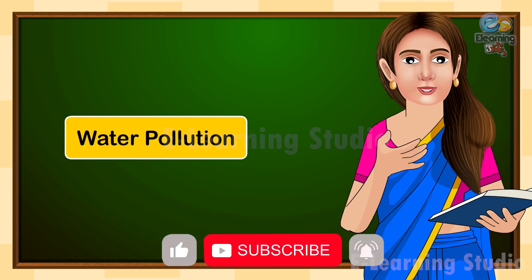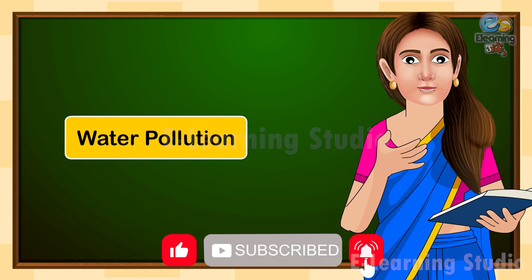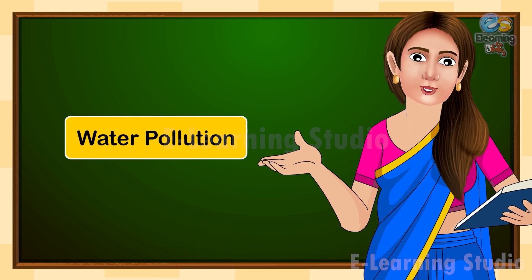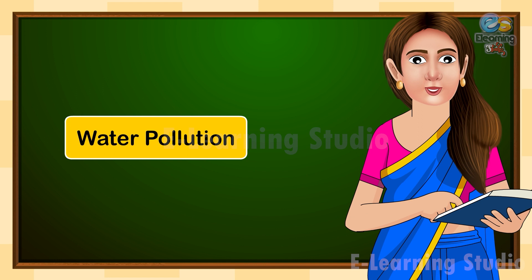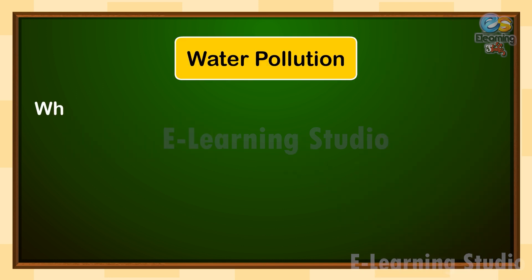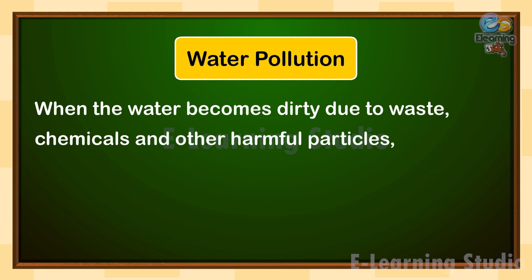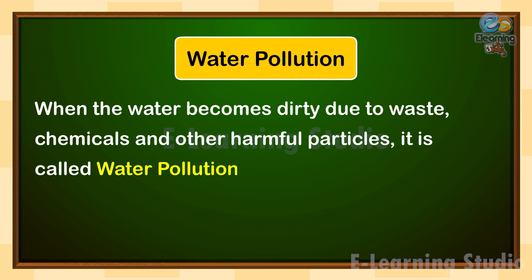Now children, move to the next type of pollution, which is water pollution. When the water becomes dirty due to waste, chemicals and other harmful particles, it is called water pollution.